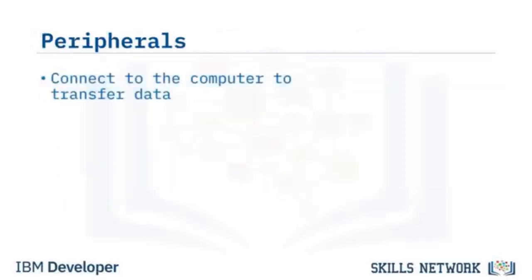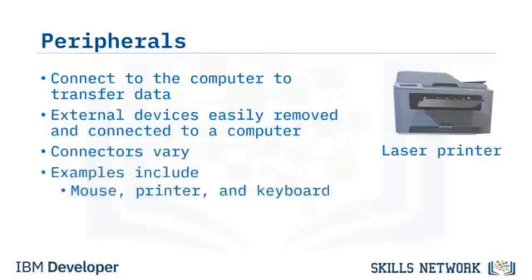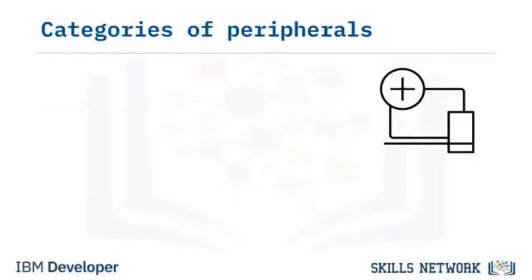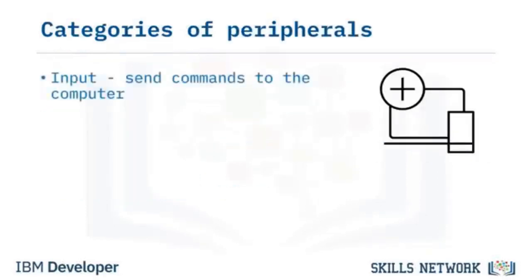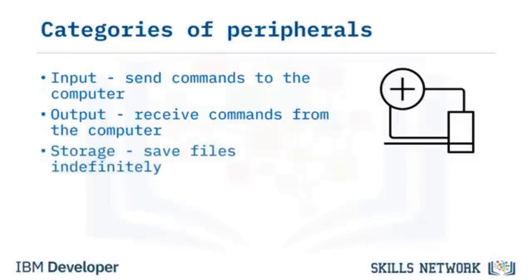A peripheral is a device that connects to a computer to provide extra functionality. It is used in the transfer of data to or from a computer, and can be easily connected and removed. Peripherals attach through a connector, the type of which varies with the peripheral. Examples include a mouse, keyboard, and printer. There are three kinds: input devices, output devices, and storage devices.